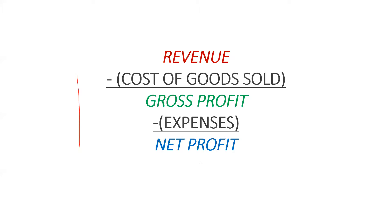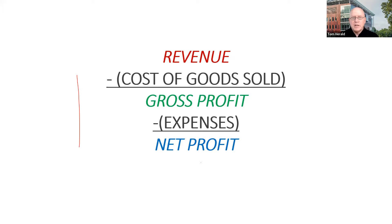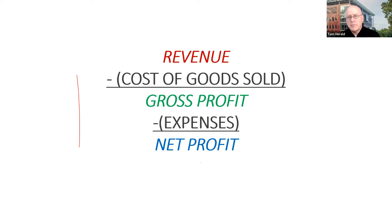You'll hear the terms top line and bottom line. The top line is the revenue line — where all income comes in. Knowing your sources of revenue is an important first step. The bottom line, or net profit, refers to net profitability. In between, we have cost of sale — if you're a service organization you may not have one, but if you manufacture something you deduct that before reaching the middle line: gross profit, from which we take all of our expenses.